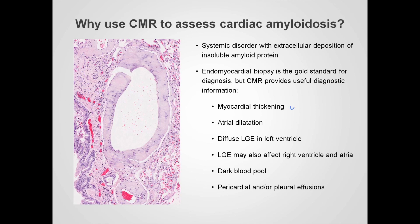CMR can identify myocardial thickening, atrial dilatation, and show evidence of diffuse late gadolinium enhancement in the left ventricle. This can also affect the right ventricle and the atria. We also see an unusual appearance of a dark blood pool during late gadolinium enhancement imaging, whereas normally the blood pool would be relatively bright. And we may see evidence of pericardial and/or pleural effusions.